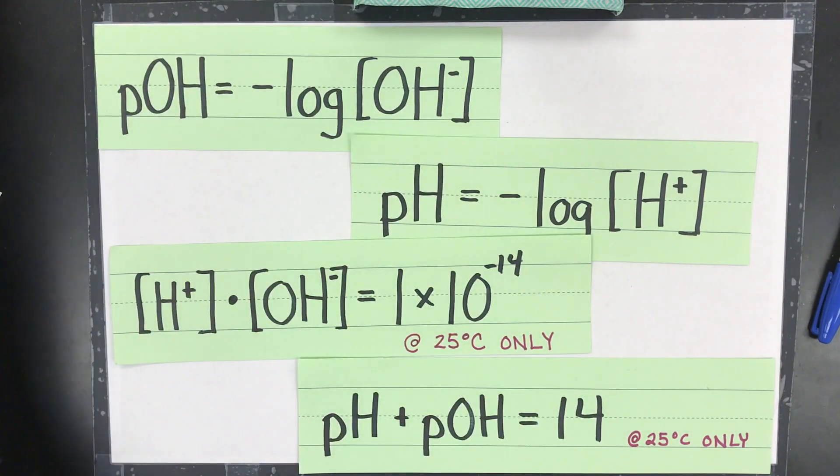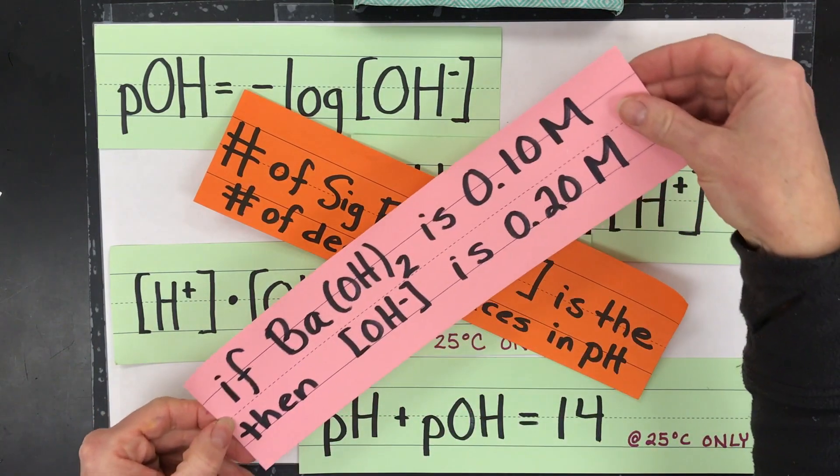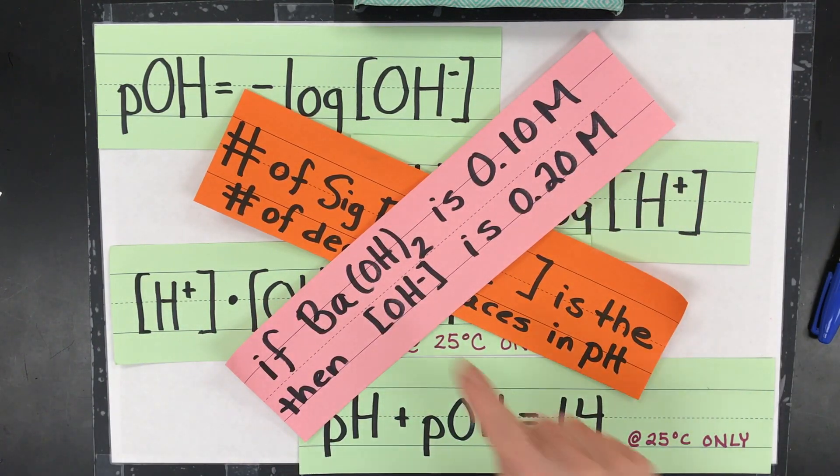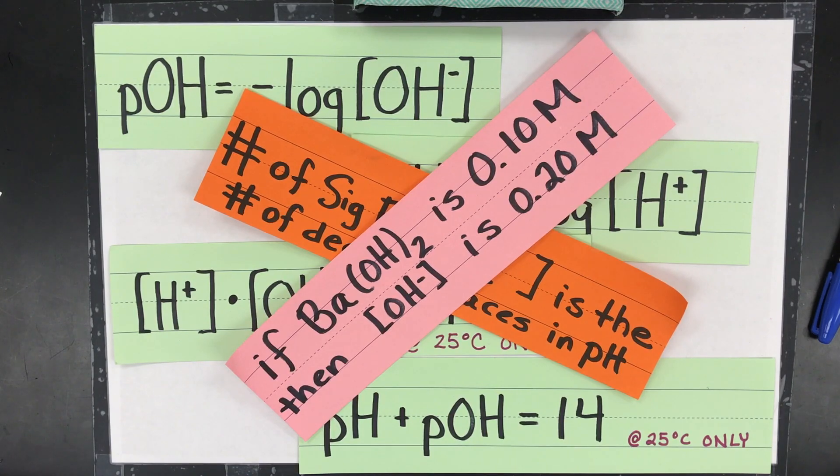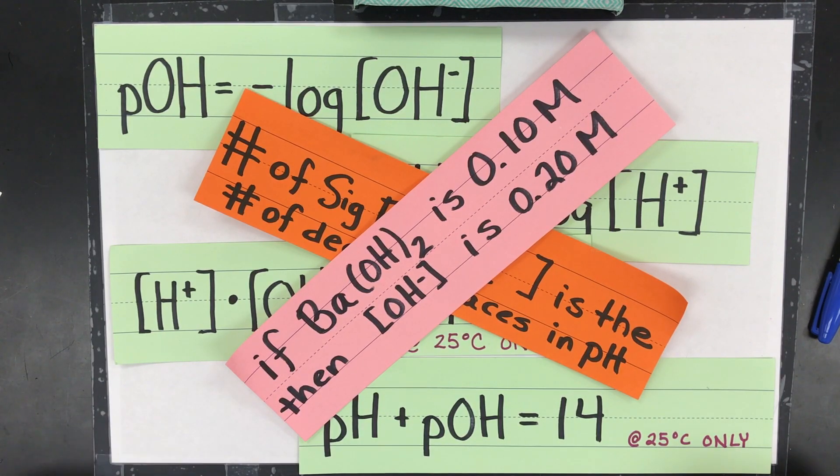And then last but not least, don't forget, I'm going to throw this on the top. The sig fig rules are very different. And the other last little tricky thing is, I'm going to put a little X here. Barium hydroxide. Be careful with your hydroxide concentration with alkaline earth metals. Thanks. Hope to see you again. Good luck, chemists.